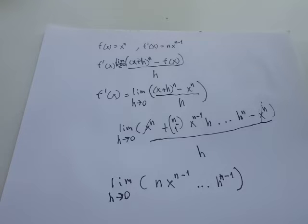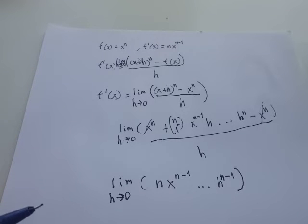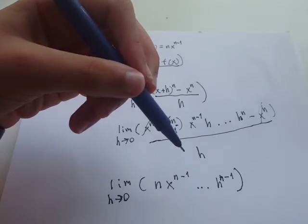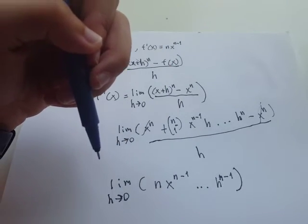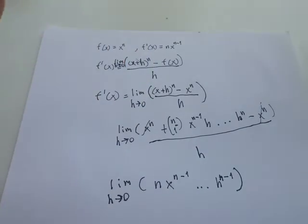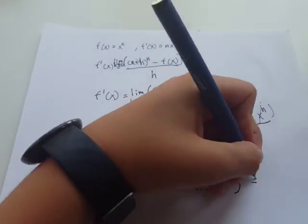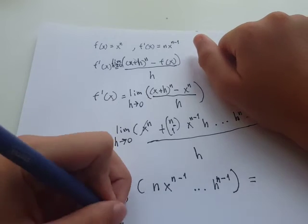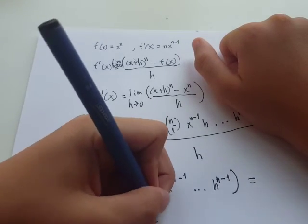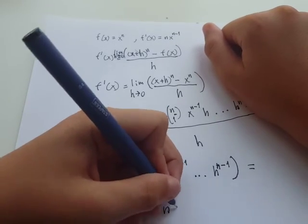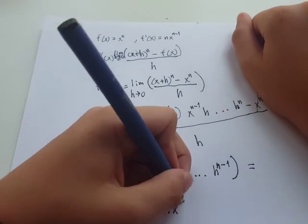Now, because h approaches 0, all the other terms except this one are dependent on h, and when h becomes 0, they become 0. So what we're left with is that the derivative of f of x is equal to n times x to the n minus 1.